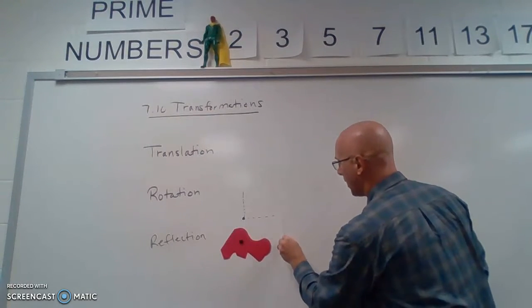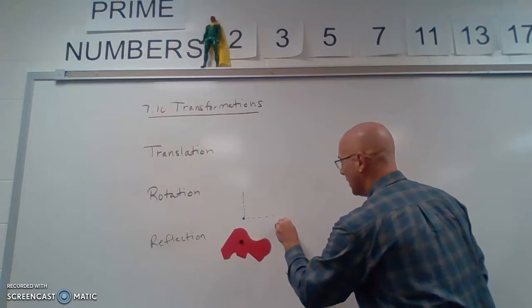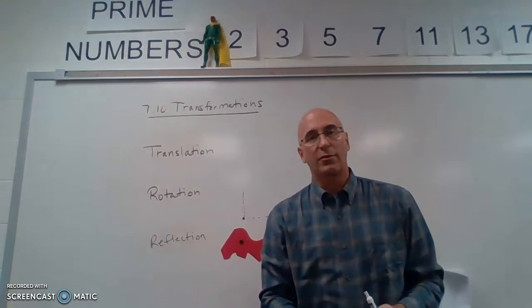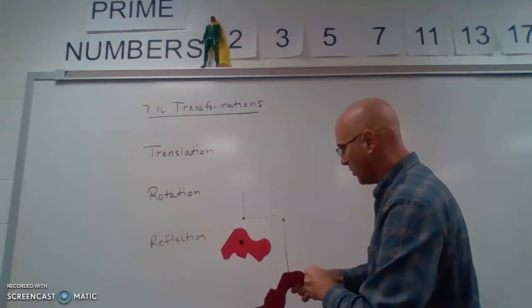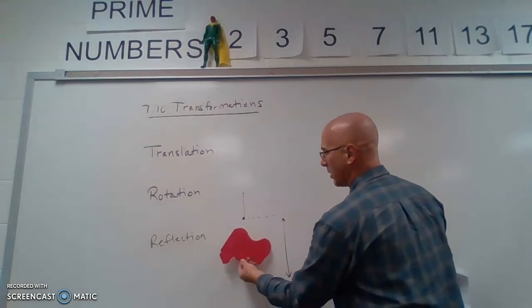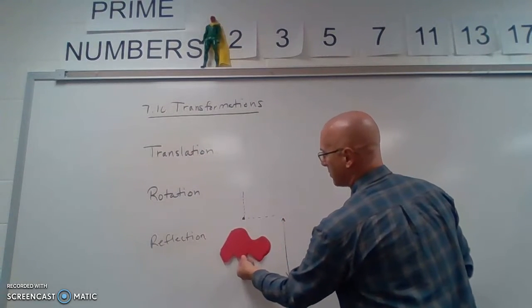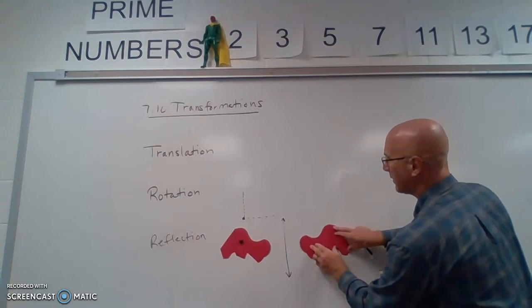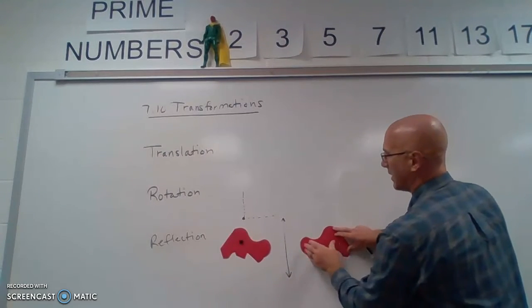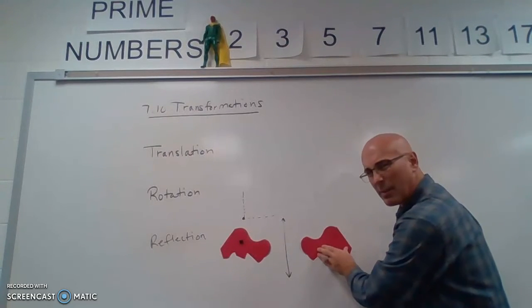What we do is we have a special line. This is called a line of reflection. And what it does is we pretend this is our mirror. And what the shape does is it flips right across that line, so that it is kind of, for lack of better words, backwards.